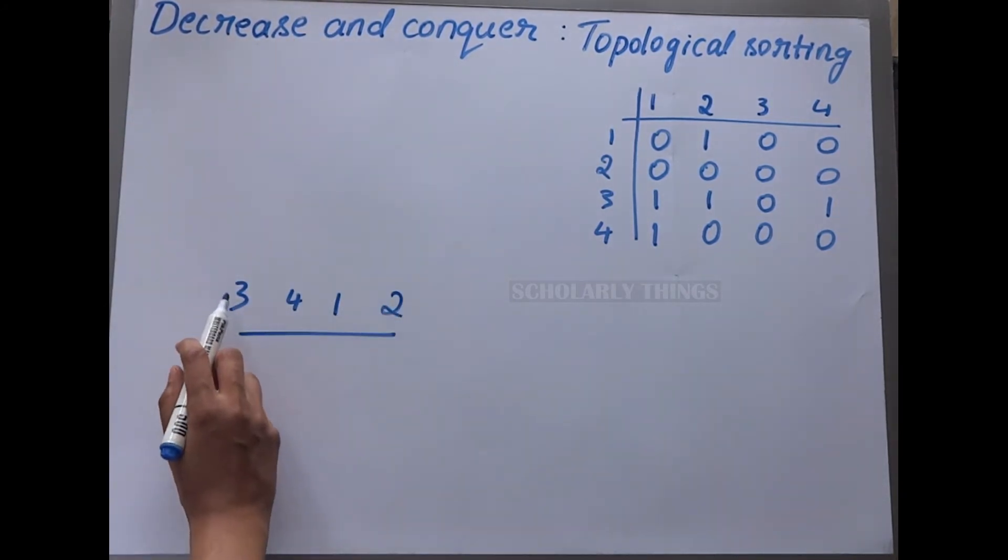The deleted sequence is 3, 4, 1, 2, and this is the topological sequence.